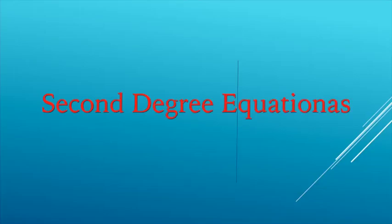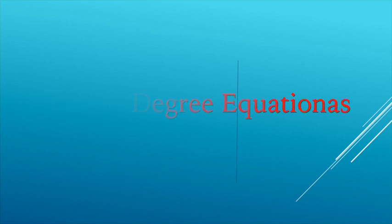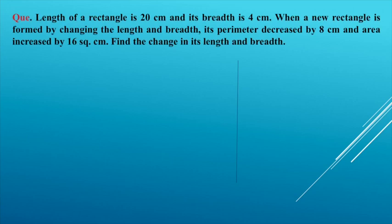In the discussion of second degree equations, the question states: the length of a rectangle is 20 cm and its breadth is 4 cm. When a new rectangle is formed by changing the length and breadth, its perimeter decreased by 8 cm and area increased by 16 square cm. Find the change in its length and breadth.